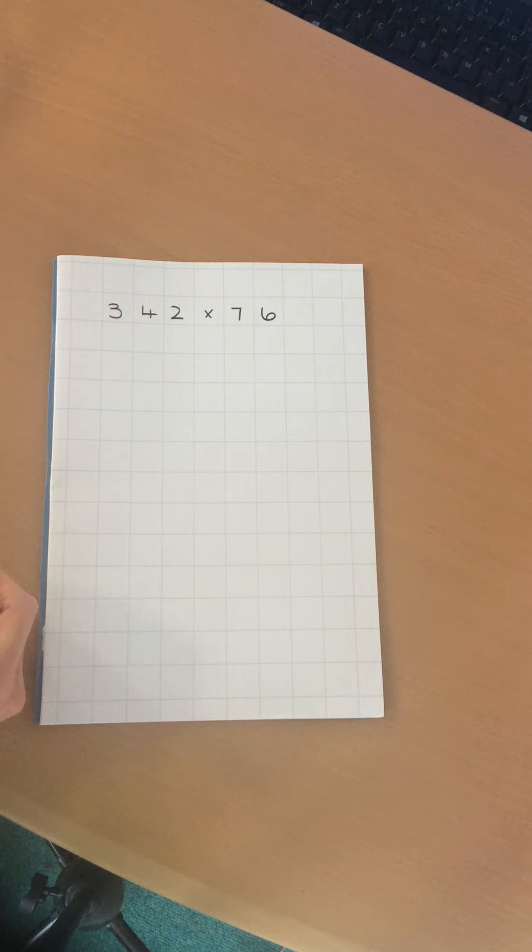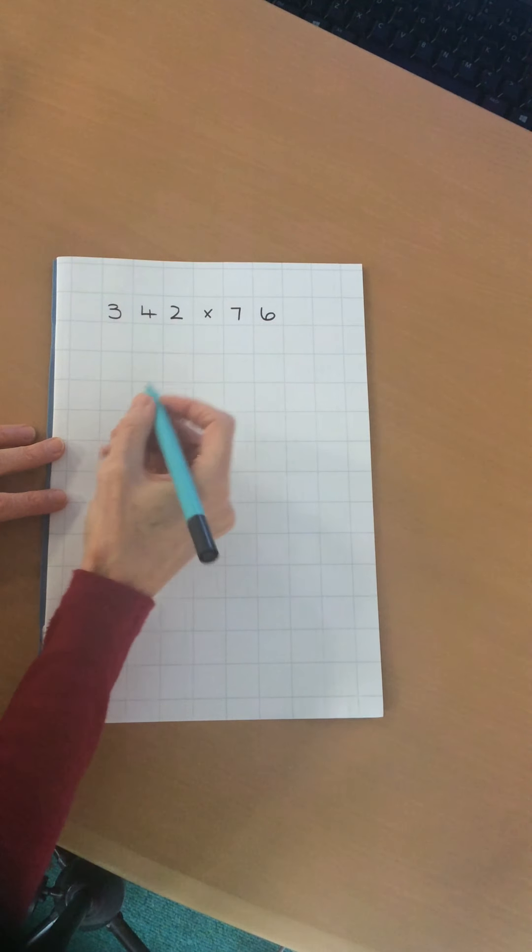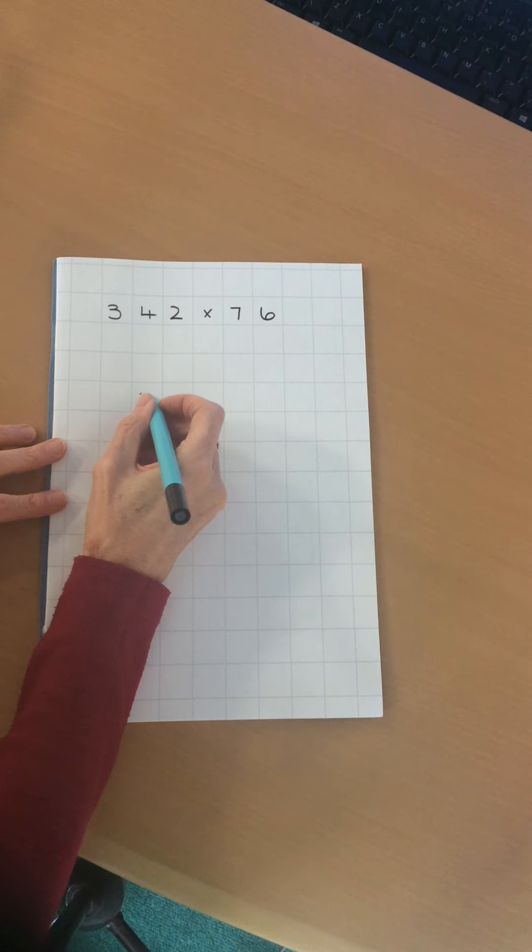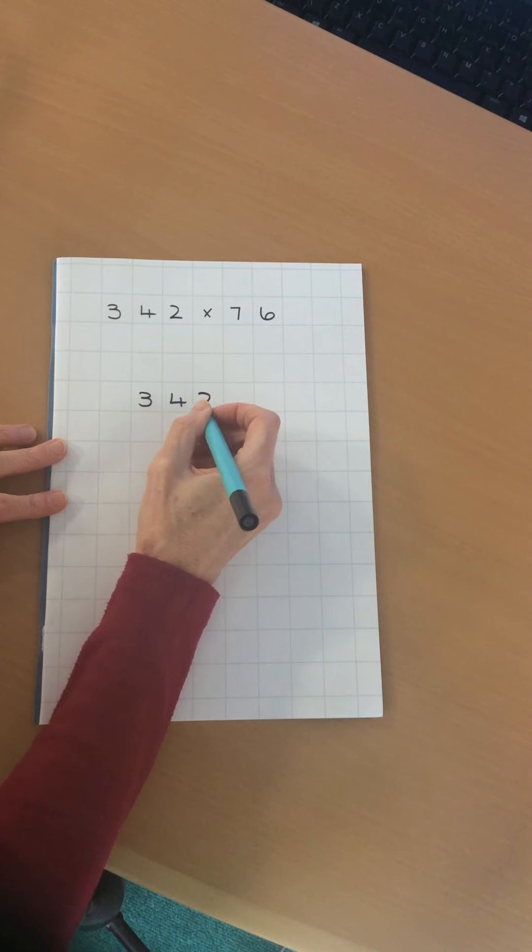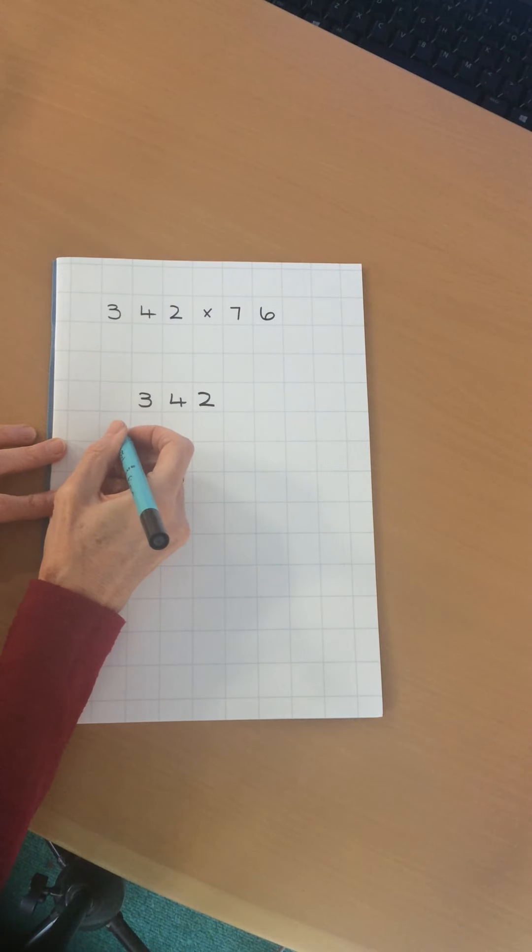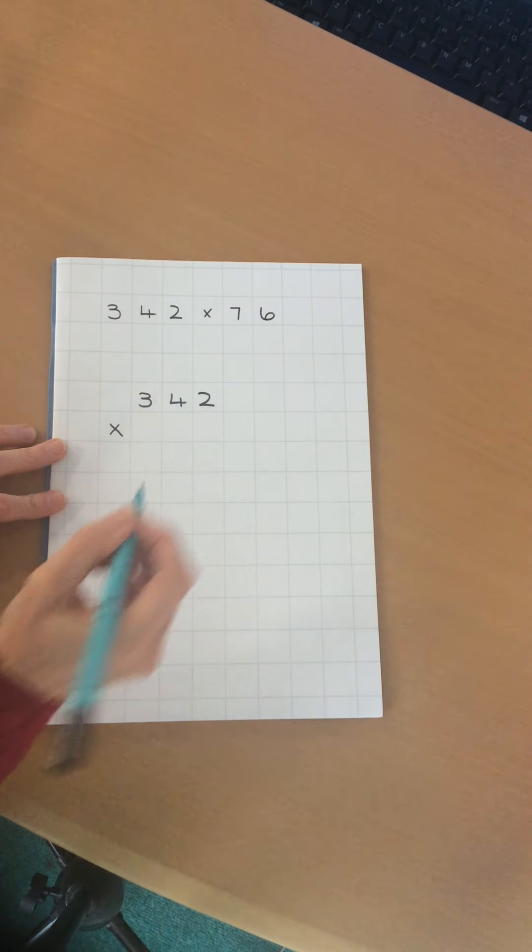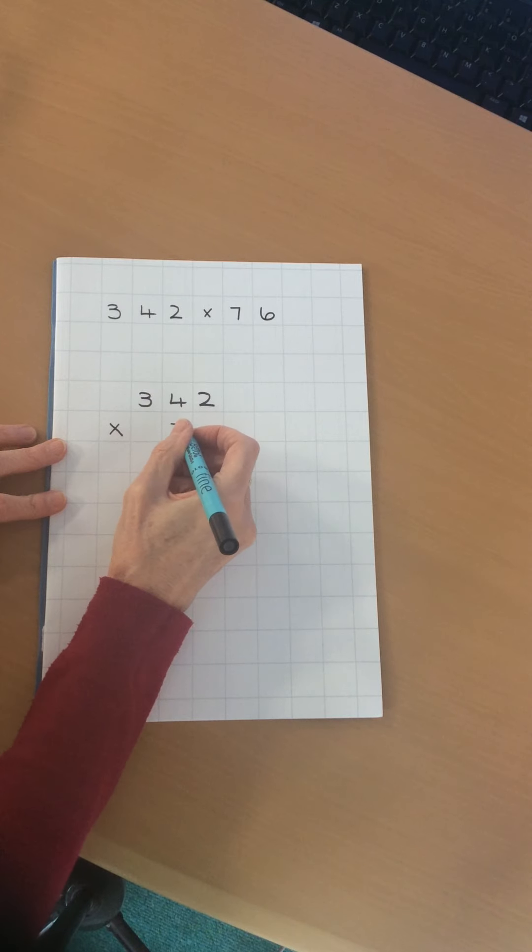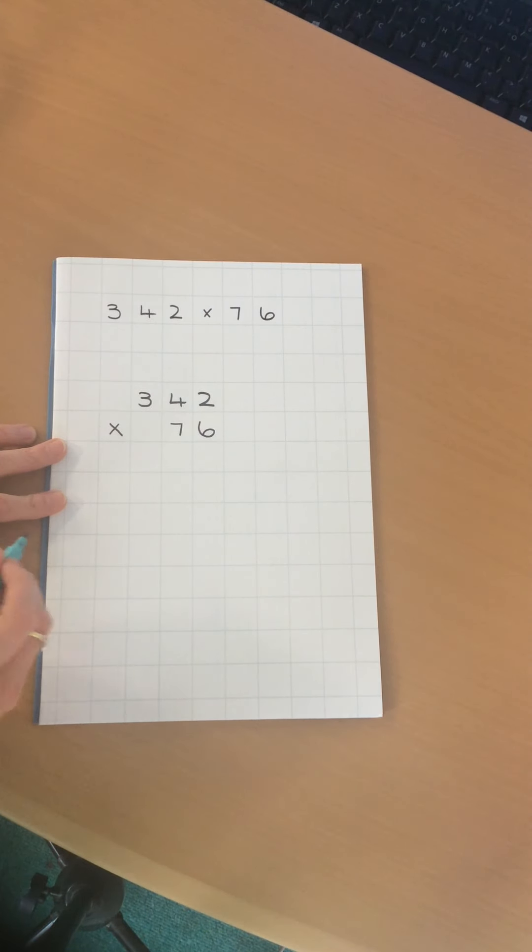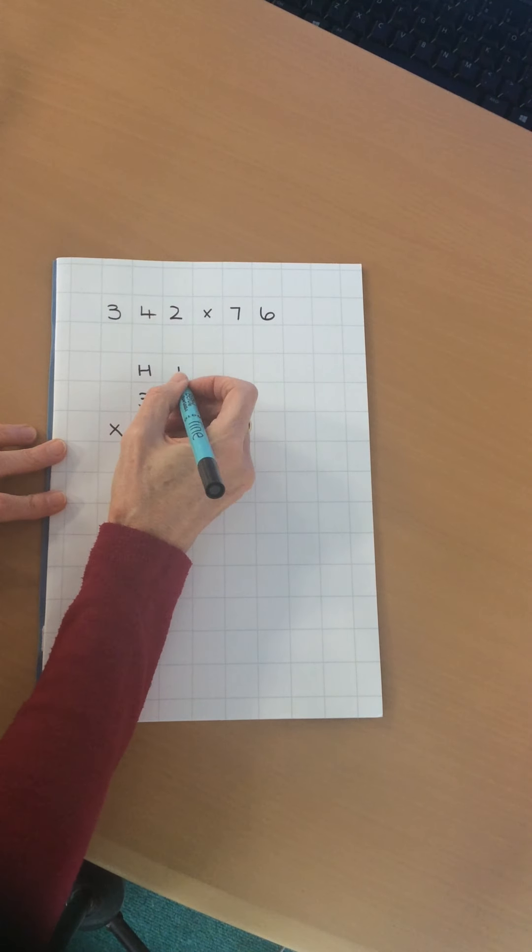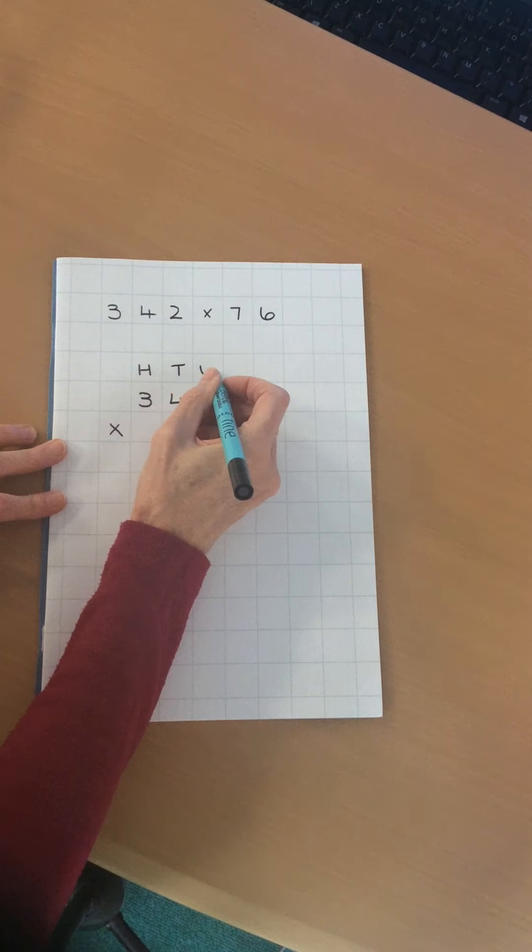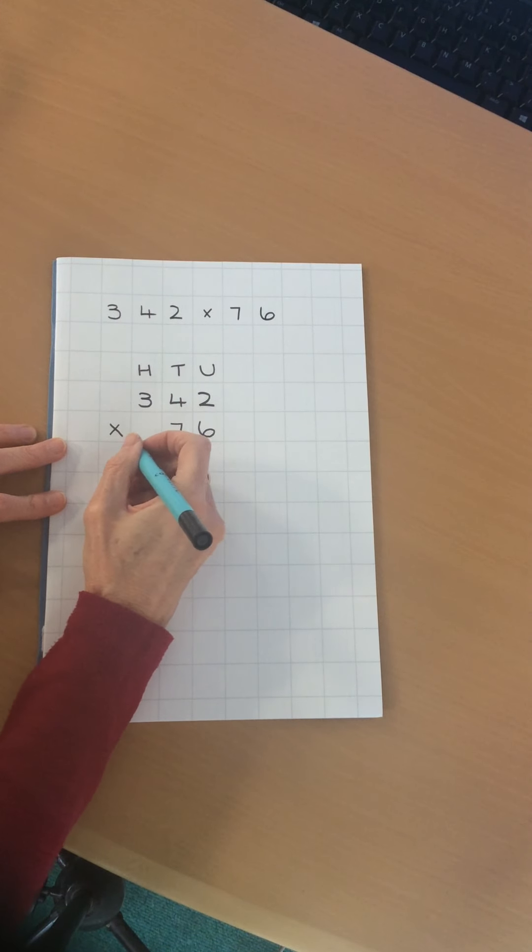The first thing to do is make sure that I set my work out properly. I'm going to write the largest number at the top, 342, multiplied by 76, making sure I'm putting the numbers in the right place value columns. I'm going to label my place value columns hundreds, tens, and units and draw a line underneath the 76.